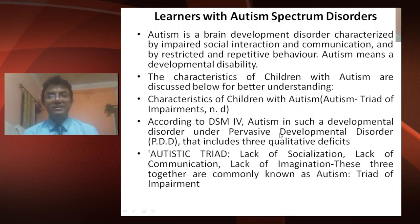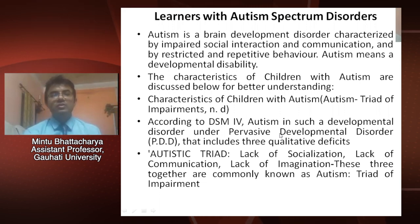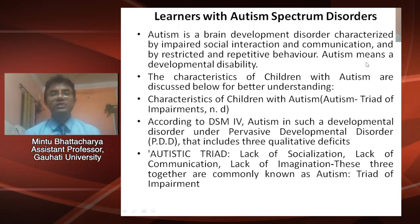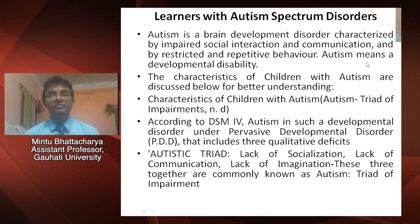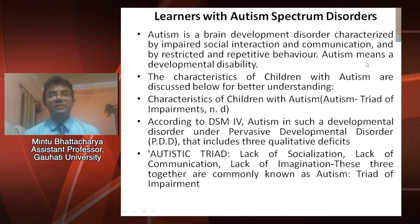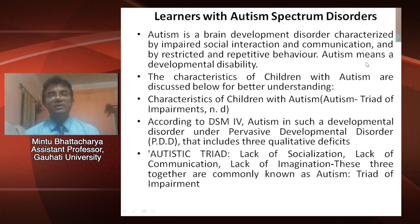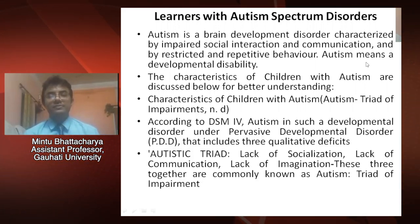Dear students, now we will be discussing learners with autism spectrum disorders. Autism is a brain development disorder characterized by impaired social interaction and communication, and by restricted and repetitive behavior. Autism means a developmental disability. The characteristics of children with autism can be understood by the autism triad of impairments.